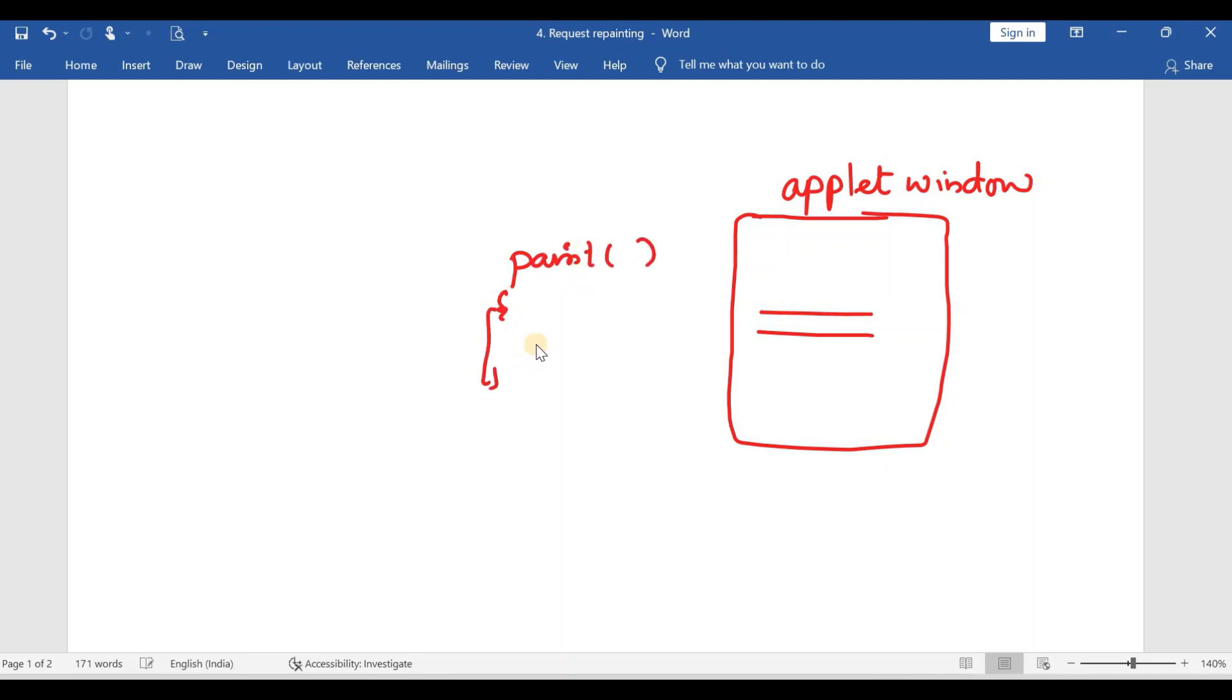So we are going to write a method called paint method. Inside this paint method, we are going to use the drawstring method. We are going to call the drawstring methods, but who is going to call the paint method? So there is a method called update.